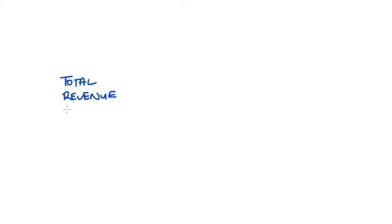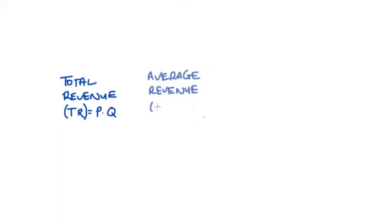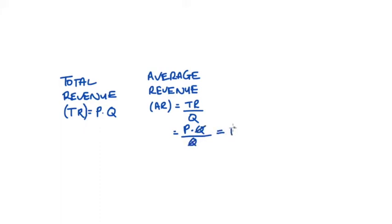Let's start with our definitions. Total revenue is just going to be equal to the price that you sell each good at, multiplied by the quantity that you sell. Average revenue is equal to total revenue divided by the quantity you sell, so that's going to be the average revenue per unit. Substituting in P times Q for total revenue, we see that average revenue is just going to be equal to the price.